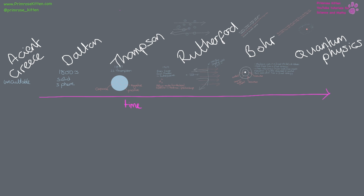The model of the atom has changed a lot over time because of new developments and discoveries. From ancient Greece where they developed the word atom meaning uncuttable, to Dalton where it was a solid sphere, to J.J. Thomson who discovered the electron and proposed the plum pudding model — a positive sphere with negative bits dotted through it. Rutherford did the gold foil experiment and worked out it had a solid centre, then Bohr developed the nuclear model we use today.